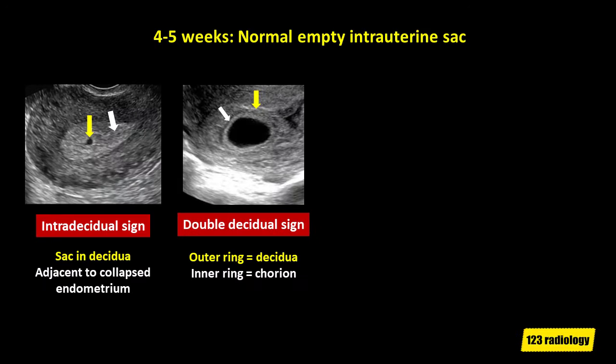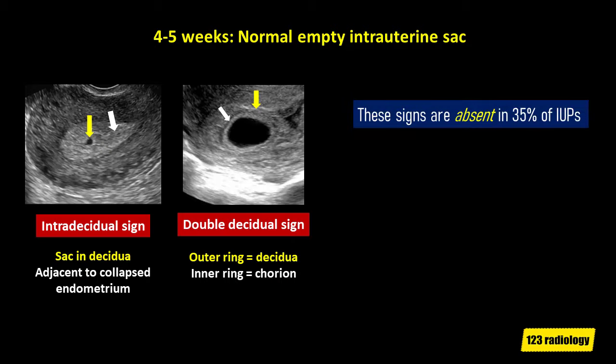If we don't have a yolk sac within a gestational sac, there are other signs that we can use to diagnose an IUP. At 4 to 5 weeks it is normal to have an empty intrauterine sac. The image on the left shows the intra-decidual sign — the yellow arrow shows a sac-like structure that is embedded eccentrically within one of the decidua, located adjacent to a collapsed endometrium. The image on the right shows the double-decidual sac sign: the yellow arrow shows the outer ring, which is the decidua, next to the inner ring, which is the chorion. Note that these signs are absent in 35% of intrauterine pregnancies, so keep that in mind.